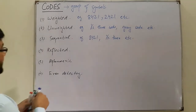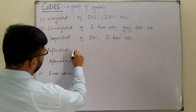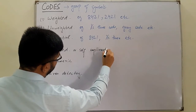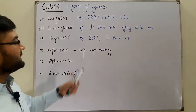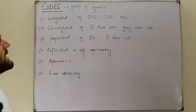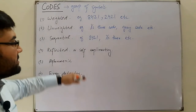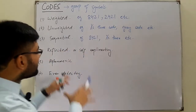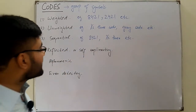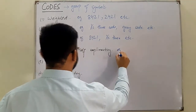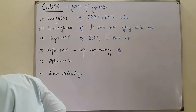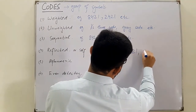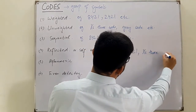Reflected code, also called self-complementing code — in this code, the first number is the complement of the last, the second is the complement of the second-to-last, the third is the complement of the third-to-last, and so on. It follows a particular sequence. Examples for this are the 2-4-2-1 code and the Excess-3 code.